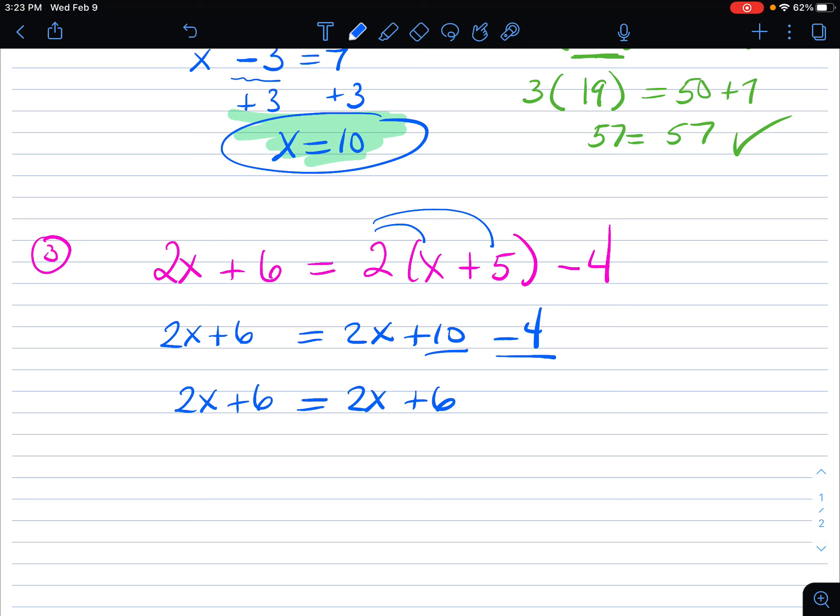Now from here, I want to get the x's all gathered on either the left or right side. I'm going to subtract 2x from both sides. And I get 6 equals 6. Now you'll notice here the variables canceled out completely. We have 0x's on the left and 0 on the right.